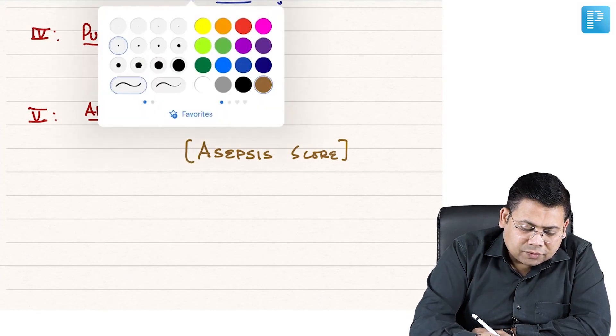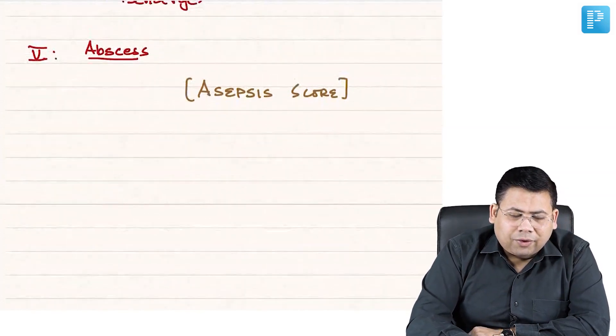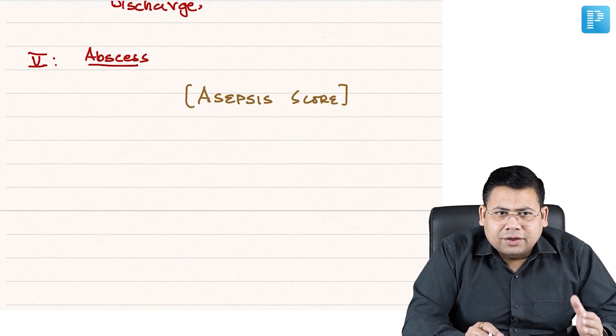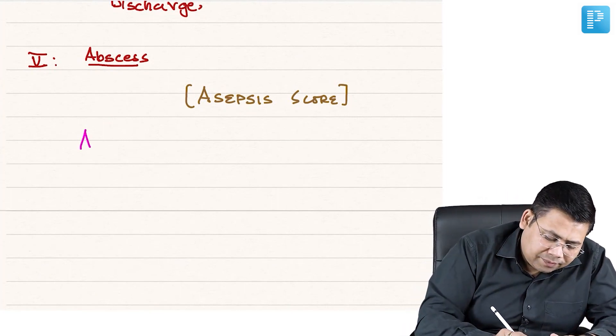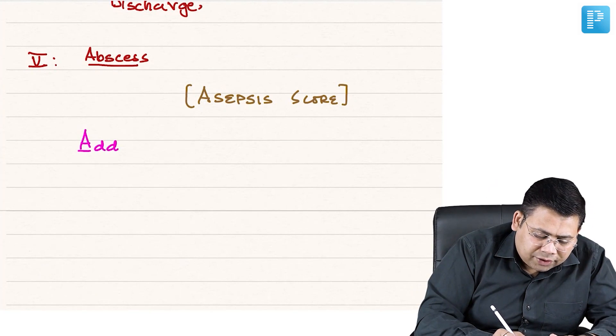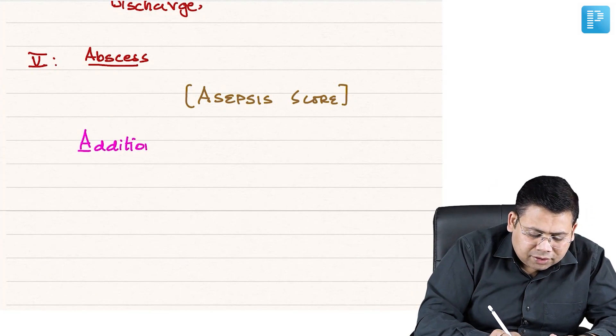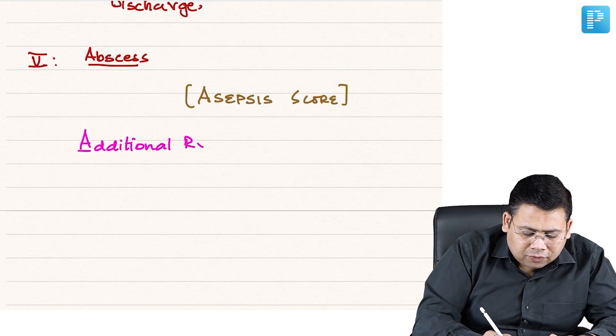ASEPSIS score is a point-based scoring system. The point calculation will never be asked in your exam, but you should be knowing what are the parameters.